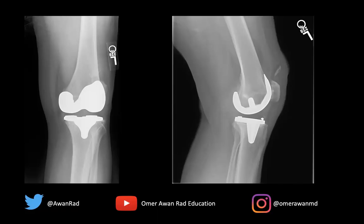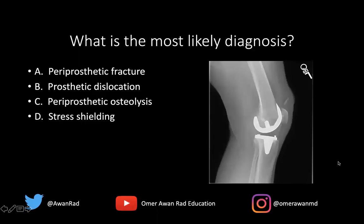Hello everyone, and welcome to week 27 of MSK Unknown Case Series. This week, we have a frontal and lateral radiograph of the knee in a patient that's had a total knee arthroplasty. The question is: what's the most likely diagnosis here? Is this a case of a periprosthetic fracture, a prosthetic dislocation, periprosthetic osteolysis, or stress shielding?